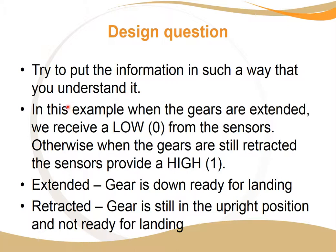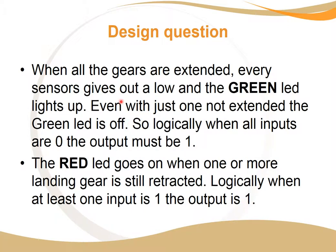In this example, when the gears are extended we receive a low or zero from the sensors. Otherwise, when the gears are retracted, the sensor provides a high. Extended means the gear is down — all wheels are down and ready for landing. Retracted means the gear is still in the upright position and we can't land. So when all gears are extended, every sensor gives a low and the green LED lights up. If even one is not extended, the green LED is off. Logically, when all inputs are zero the green output is one. For the red LED, it goes on when one or more landing gears are still retracted — so when at least one input is one, the output is one.